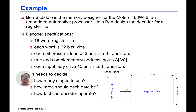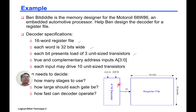As an example, there's a designer called Ben Bit Diddle. He's a memory designer for the Motorola 68W86 Embedded Automotive Processor. We want to help Ben design a decoder for a register file. He needs to design this block here. The register file spec requires a 16-word register file, each word 32 bits wide. Each bit presents a load of 3 unit-size transistors. We have a true and complemented address input A30 and A30 bar.